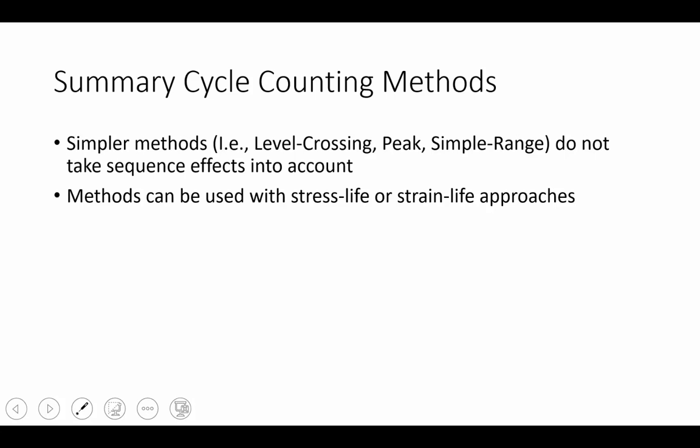Now, to summarize the methods we did see, we can say that the simpler methods, such as level crossing, peak, and simple range, these methods, in the way that they're formed, do not take into account sequence effects, meaning a previous cycle or the first cycle does not affect the next. We're taking the data and simply sorting it by the biggest to the smallest and then using whatever equations we want to use from there.